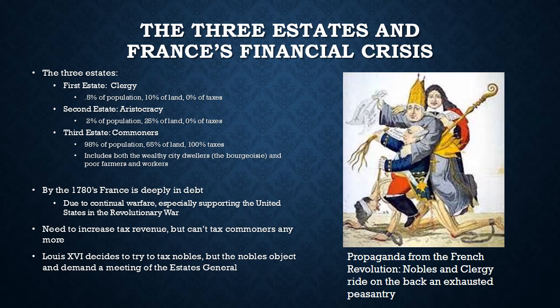The second estate, the aristocracy, was 2% of the population and it controlled 25% of France's land. In comparison, the third estate, which consisted of commoners — both wealthy commoners and poor working or farming commoners — consisted of 98% of the population but controlled only 65% of the land, and yet these guys paid 100% of the taxes.